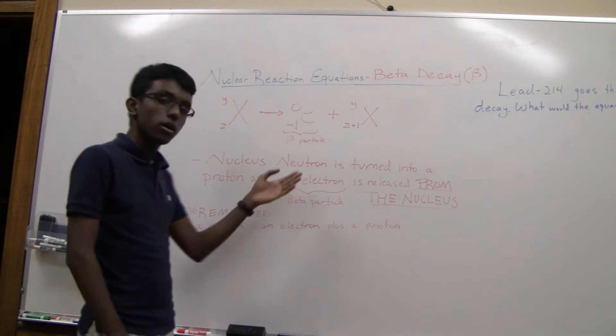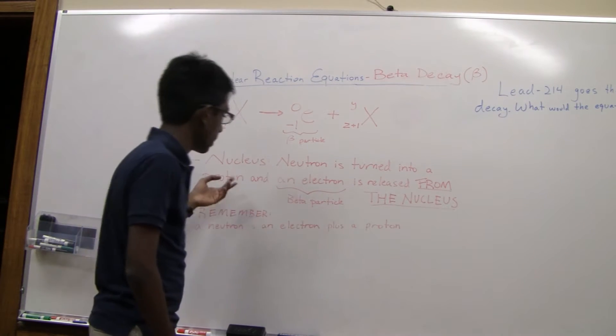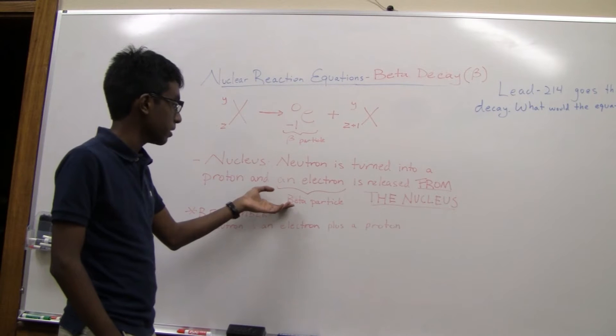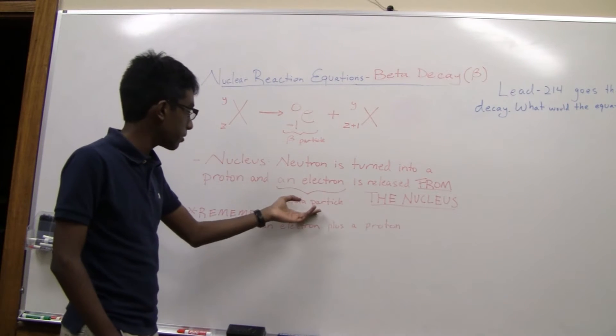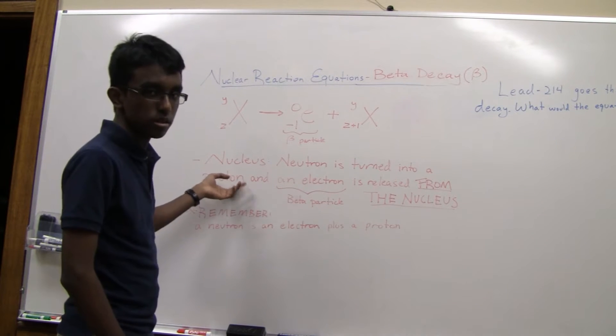In beta decay, a neutron in the nucleus will be turned into a proton and an electron. The electron is released as a beta particle, and the proton stays in the nucleus.